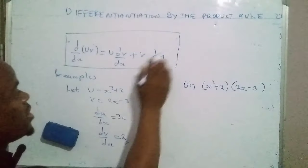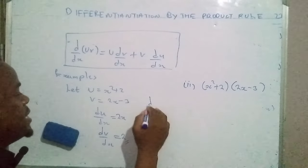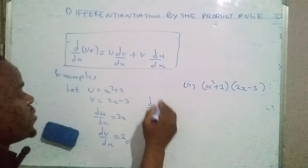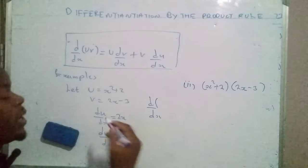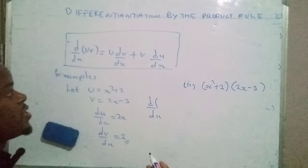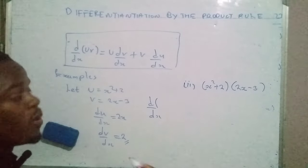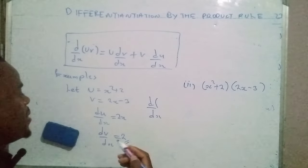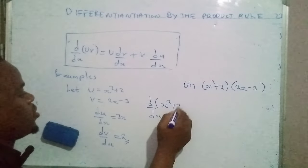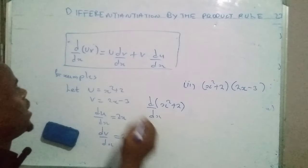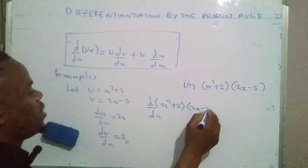Now we bring in the product rule: d/dx of the product of the two functions u and v. The function u is x squared plus two, and v is 2x minus three.